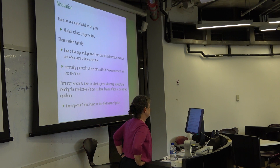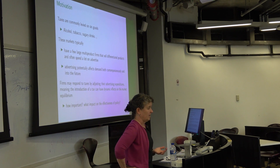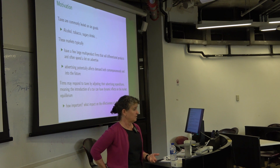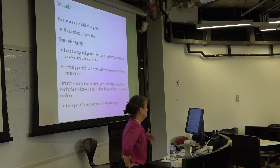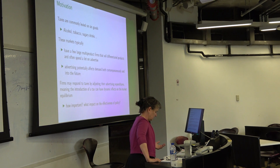The motivation is closely related to what we've said before. Taxes are commonly levied on sin goods — alcohol, tobacco, sugary drinks. These markets typically have a small number of multi-product firms selling differentiated products, and they often spend a lot on advertising. Because advertising potentially affects the shape of demand both today and into the future, firms may respond to taxes by adjusting advertising expenditures, meaning that introducing a tax will have dynamic effects on the new market equilibrium. We may also be interested in other policies that restrict advertising.